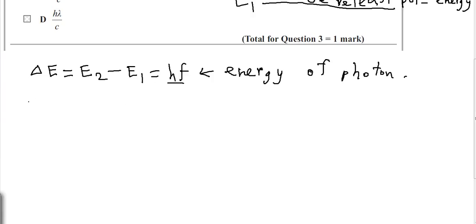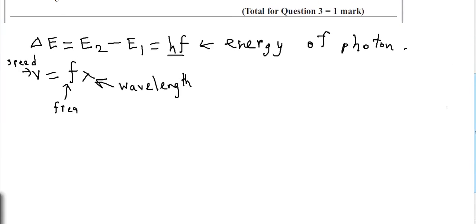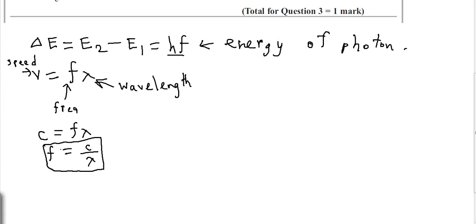We also know the equation V equals F lambda, where V is the speed of the wave, F is the frequency, and lambda is the wavelength. This is the basic equation from earlier classes. From here, we replace the speed of wave with the speed of light, since all electromagnetic radiation travels at the speed of light. So C equals F lambda. We can rearrange this equation making F the subject: F equals C divided by lambda.